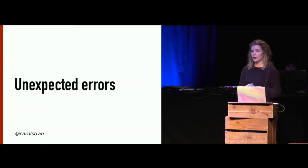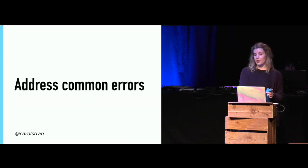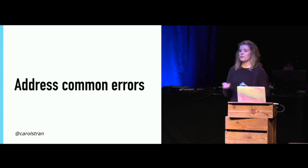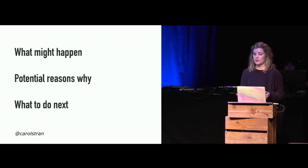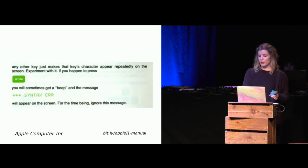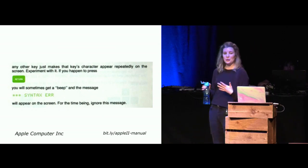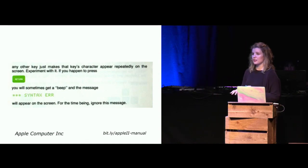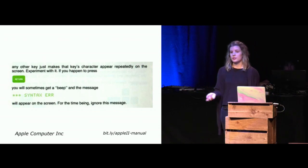Unexpected errors are another common issue that people face. While we can't necessarily prevent this through documentation alone, we can make it better by considering and addressing common errors if you know them. This helps reassure your users that mistakes will happen, and it gives you a chance to offer suggestions for troubleshooting. When writing about these errors, try to explain what might happen, why, and then tell the reader what to do next. This is a screenshot from the Apple II BASIC programming manual from the 1970s, but it tackles common user errors quite well and explains what happened, why, and what to do next — in this case, you got a beep, you pressed return, and you can ignore it.